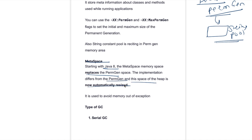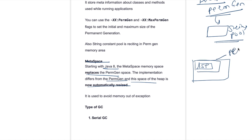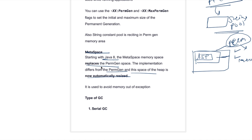Previously, the permanent generation had a set limit for minimum and maximum size. That has been replaced with MetaSpace, and MetaSpace will automatically increase the space whenever you need more memory. That's why this enhancement was brought in Java 8. Now we have seen what kinds of spaces are there in heap memory, and now we will see the types of garbage collectors.